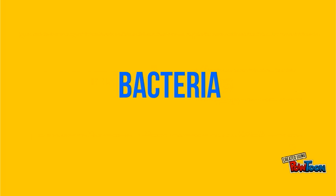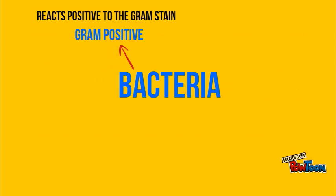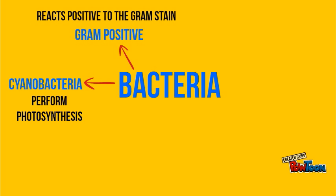Bacteria are the most common prokaryotes in your environment and on your body. They can be divided into the following five groups. Gram-positive: the cell wall of these bacteria gives a positive reaction to a chemical called a gram stain. Cyanobacteria: these bacteria make their own food by photosynthesis. Because of their color, they are often called blue-green bacteria.